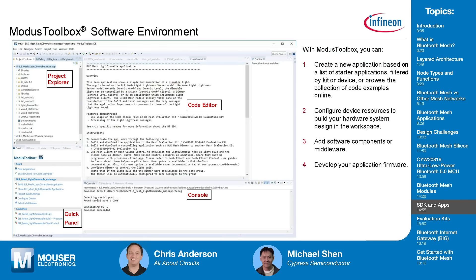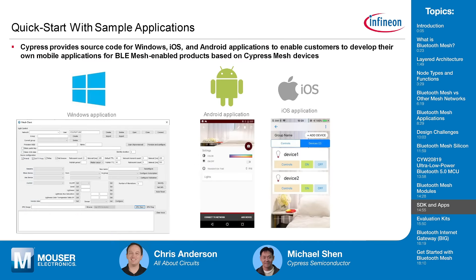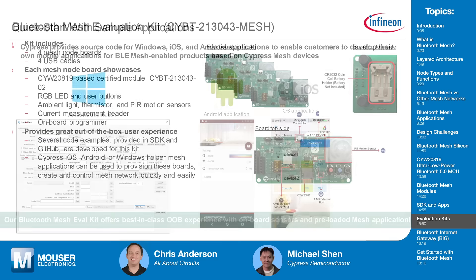Cypress offers a complete SDK with example code — no separate compiler or editor needed, everything is included — downloadable from the Cypress website. For app control, Cypress provides a Windows-based application, an Android app, and an iOS app. All source code is also available on GitHub so you can modify it to fit your needs. Example code covers turning lights on and off, provisioning devices, and for advanced users, mimicking protocols.